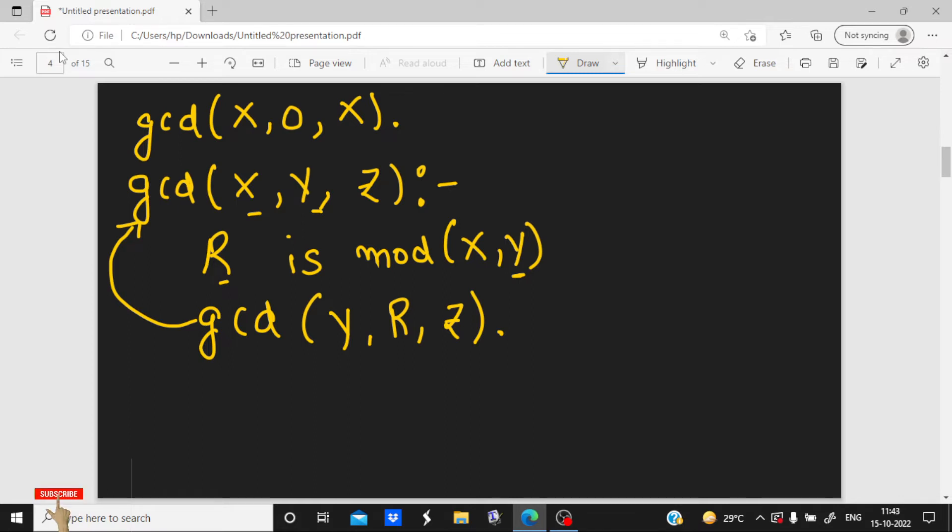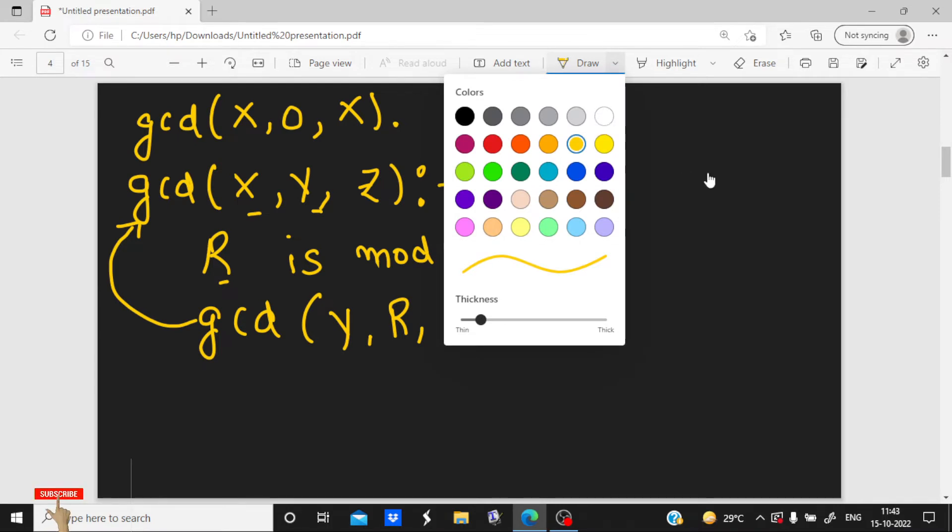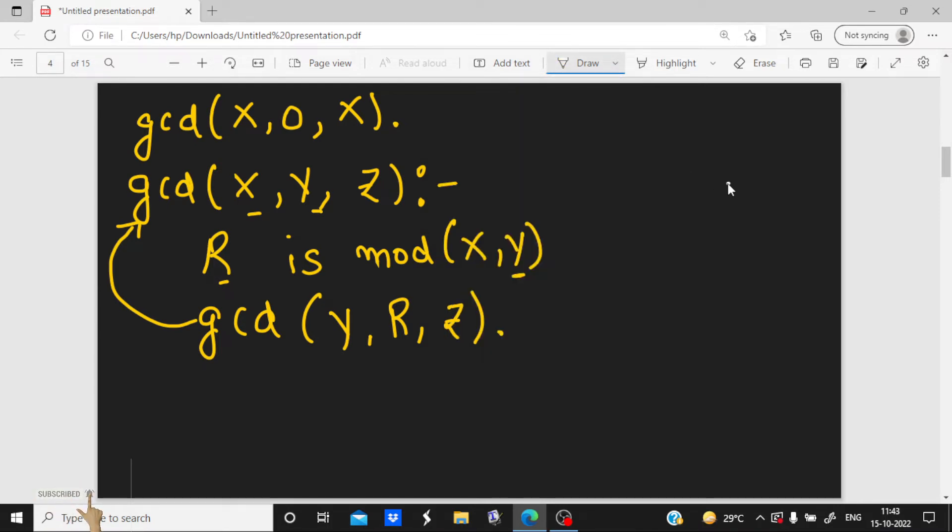So now understand this with the same example which we have considered, 15 and 10. So the first situation I have x is equal to 15 and y is equal to 10. So here when I take mod, that is mod of x comma y, then mod R becomes 5.